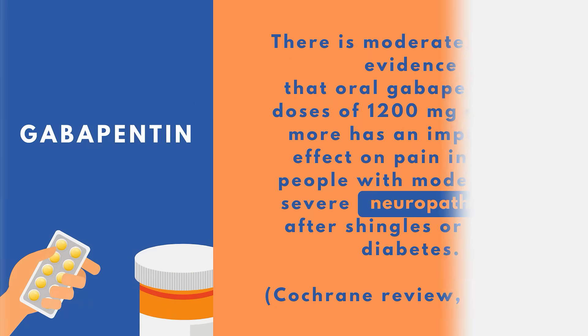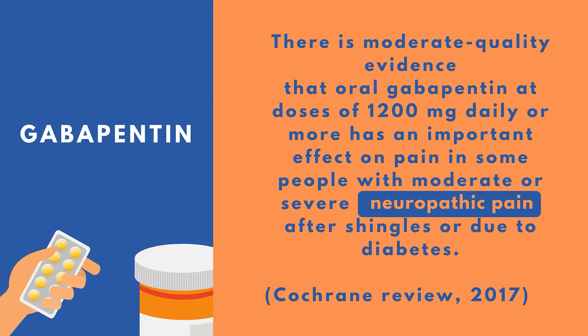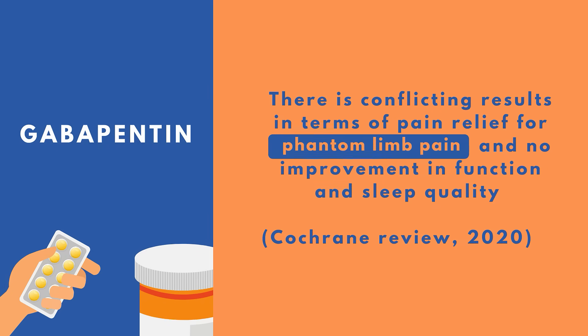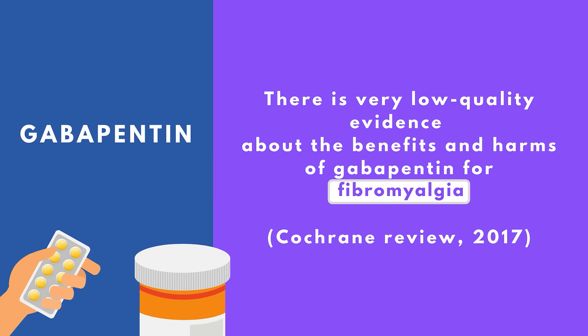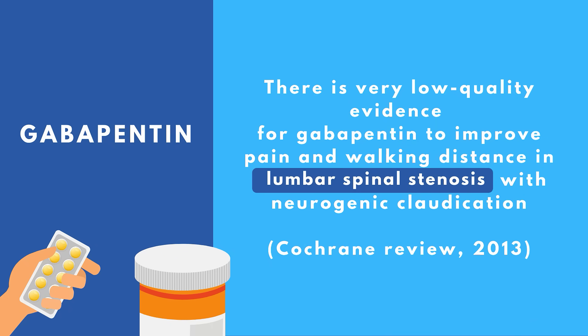There are some randomized trials of gabapentin for chronic pain conditions, and I will summarize the conclusions of the Cochrane reviews. One review showed moderate quality evidence that oral gabapentin at a dose of 1200 mg daily or more has an important effect on pain in some people with moderate or severe neuropathic pain after shingles or due to diabetes. Another review showed conflicting results for phantom limb pain and no improvement in functioning or sleep quality. A further review showed very low quality evidence about the benefits and harms of gabapentin for fibromyalgia. And another review showed very low quality evidence for gabapentin to improve pain and walking distance in lumbar spinal stenosis with neurogenic claudication.